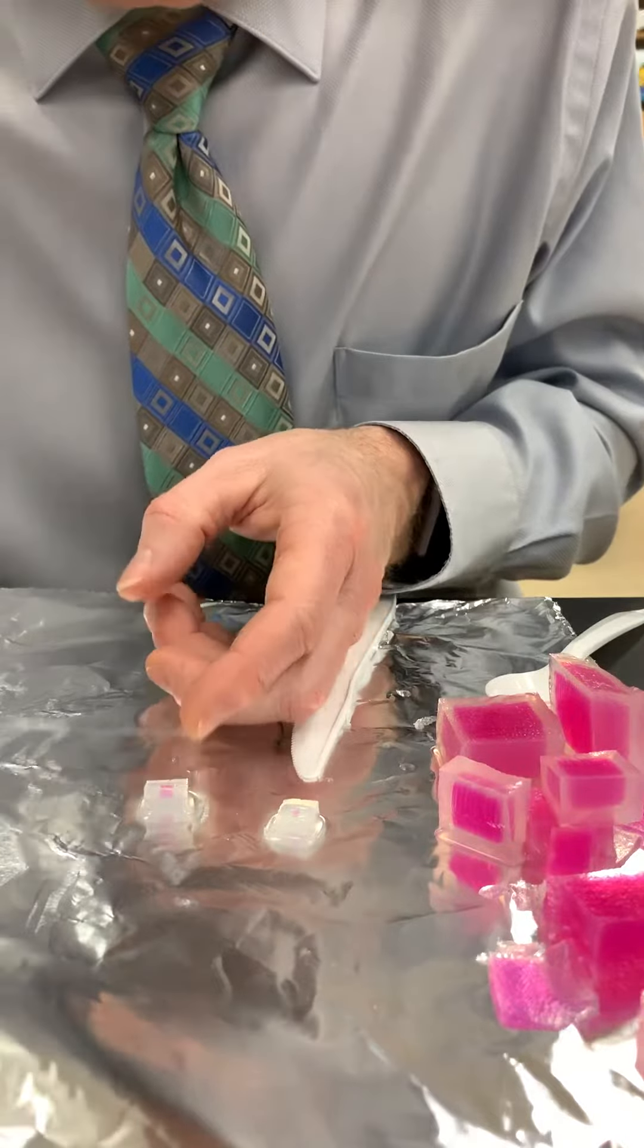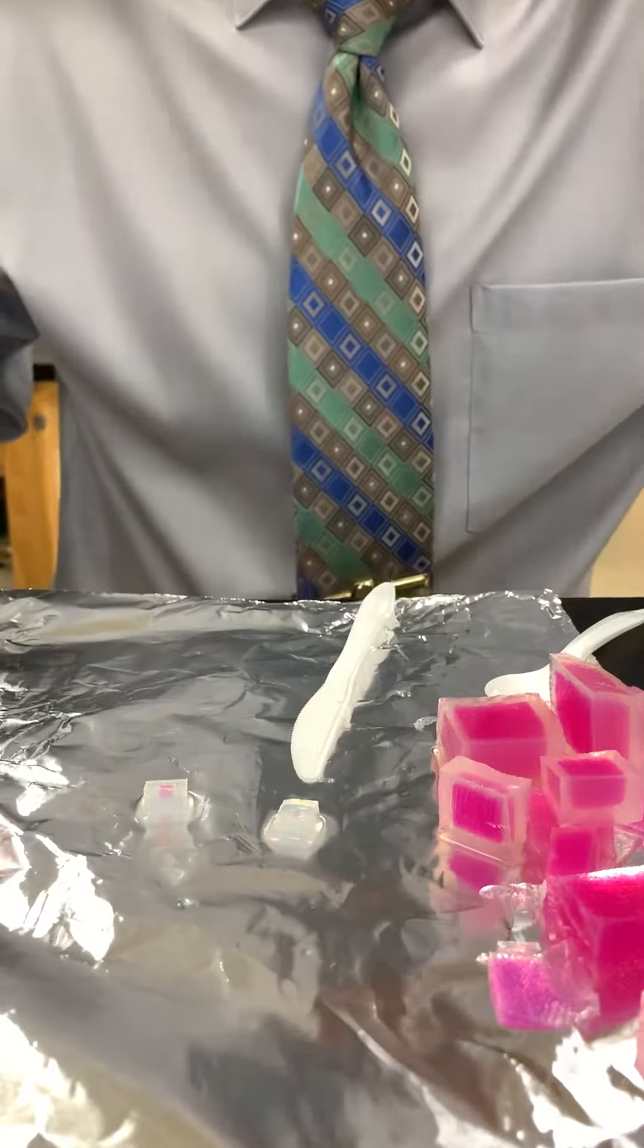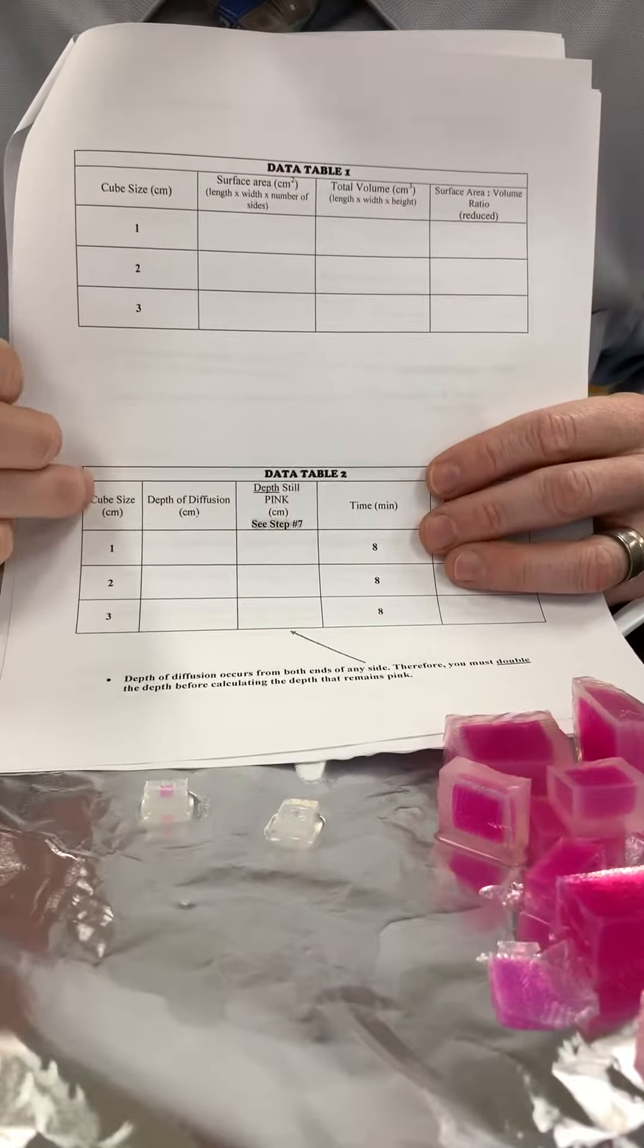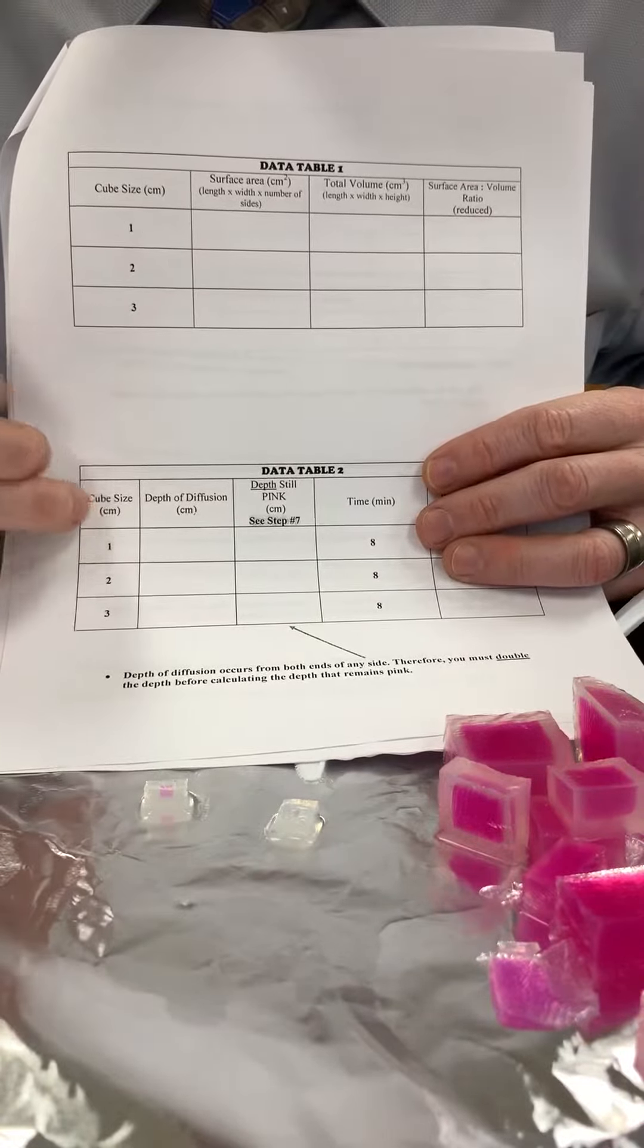0.35 or 0.4. So where I have my 1x1x1, which is here, I'm going to put for depth of diffusion 0.35.